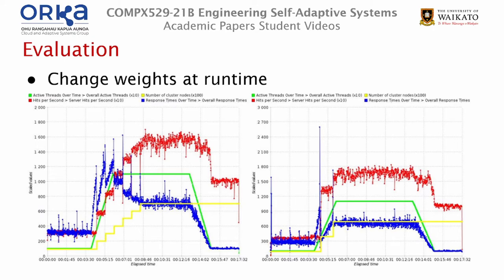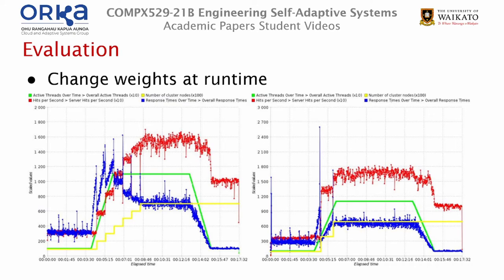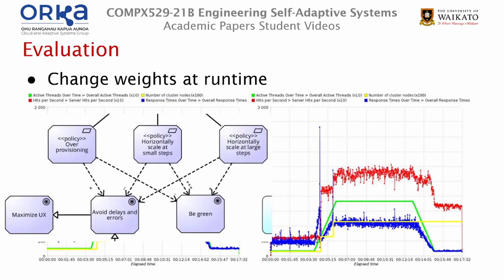Here's the graph of their results. The main thing to look at is the yellow line, which represents the number of cluster nodes. In the left-hand graph, which favoured G2 — being more green — the nodes scaled in small steps, which was expected, as this is the policy with the highest influence on the soft goal be green. The arrow going from the policy scale at small steps has a weighting of three pluses on the green goal. Conversely, the right-hand graph, which favoured G1 and G3, adopted the policies of scaling in large steps and over-provisioning, reflected in the yellow line with two big steps instead of multiple smaller steps. Scaling at large steps and over-provisioning have a higher impact on avoid delays and errors and maximize user experience than scaling at small steps does.